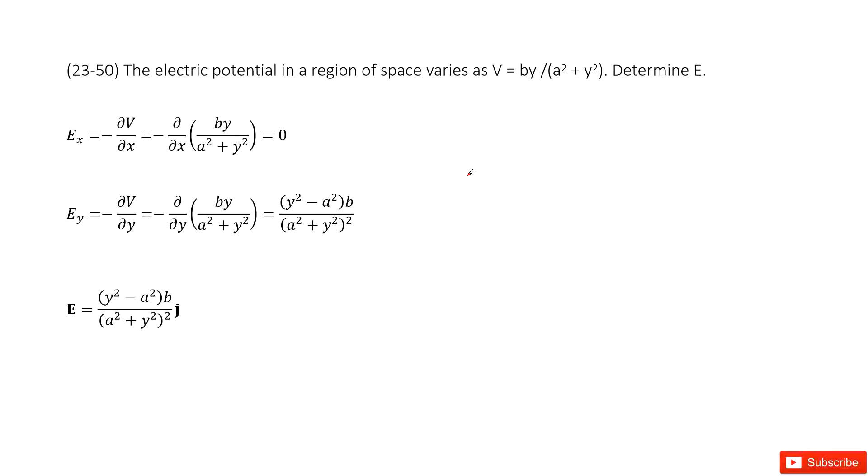Now we get the electric potential function that looks like this one. We need to determine the electric field. We know we can get the electric field by doing the negative derivation of the potential.